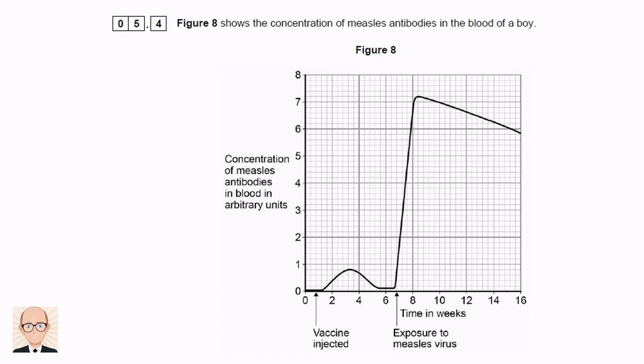This next question is the 6-mark question. It starts by asking us to study the graph showing how the concentration of measles antibodies in a person's blood changes over time as they are vaccinated and then later exposed to the measles virus. Before we attempt the question, let's revise antibodies and vaccinations.